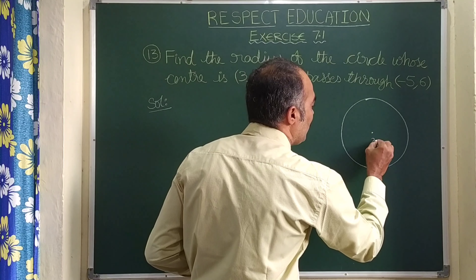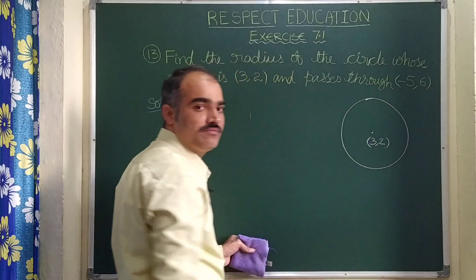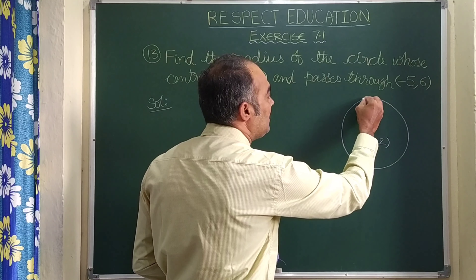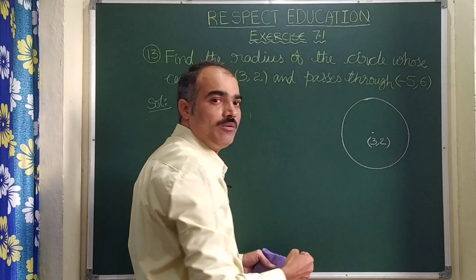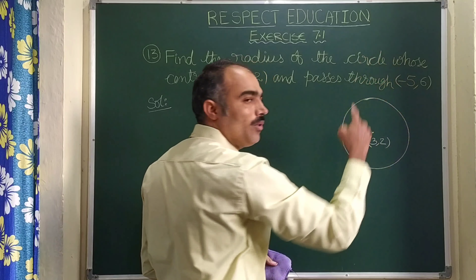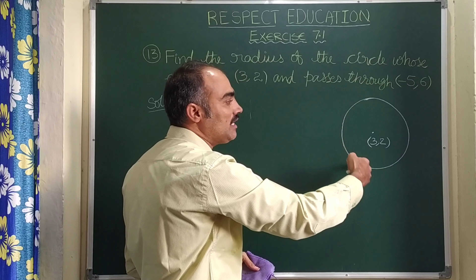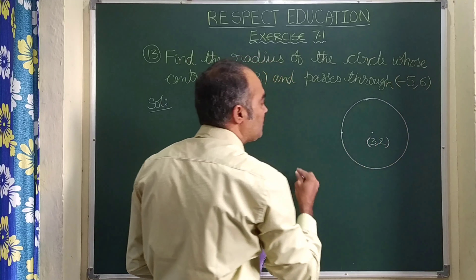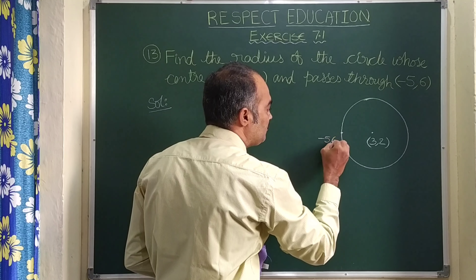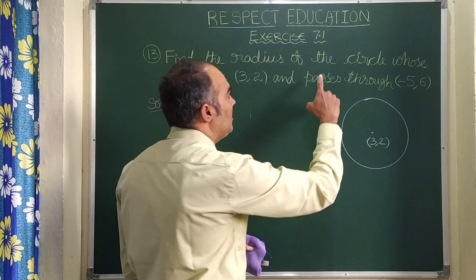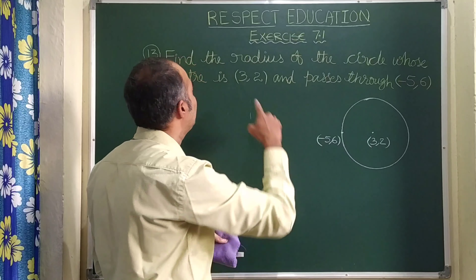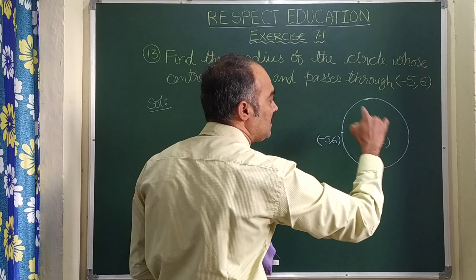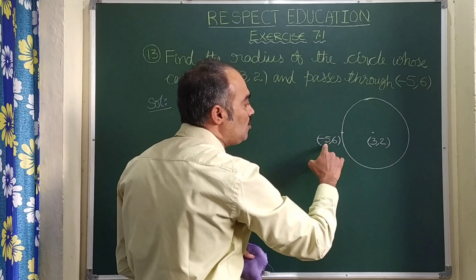Find the radius of the circle whose center is (3, 2) and which passes through (-5, 6). Let us see what is given: center of the circle is A(3, 2), and the circle passes through B(-5, 6). We need to find the radius.